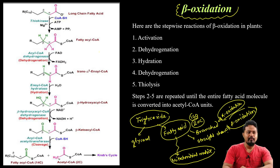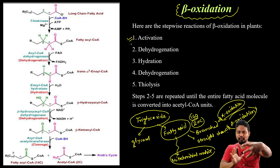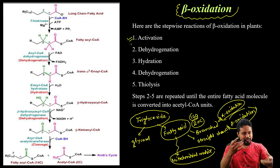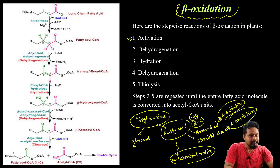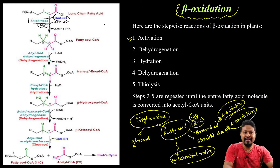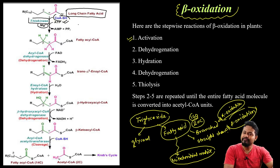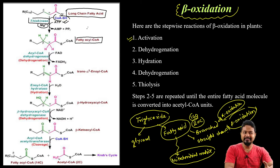First, what is activation? The fatty acid will be activated. This involves ATP, co-enzyme A, enzyme thiokinase, and magnesium — for long chain fatty acid. This activates and converts the long chain fatty acid into fatty acyl-CoA. This is the first step.